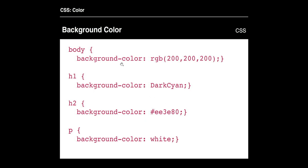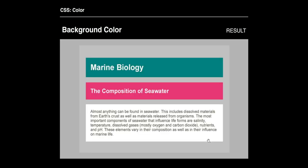Background color — same idea. You just reference 'background-color' and then apply a color to it. Again, we have RGB, dark cyan as a named color, a hex value, and white. This is what it looks like when it gets rendered.